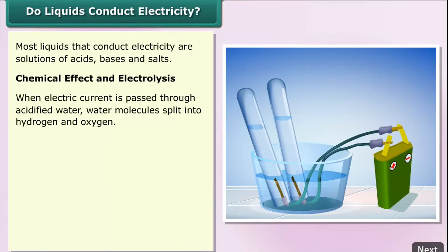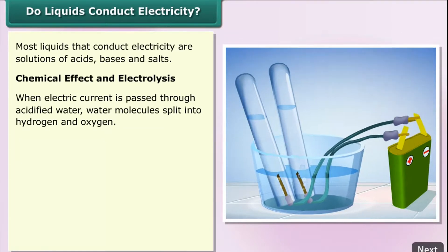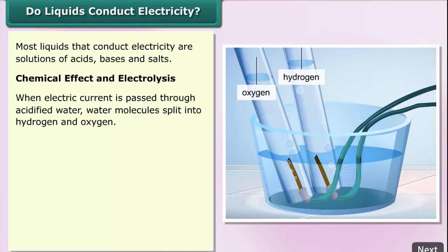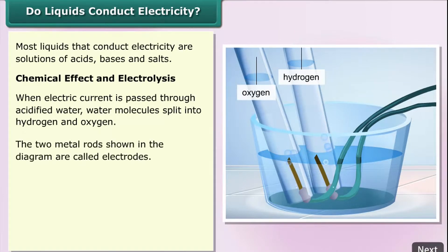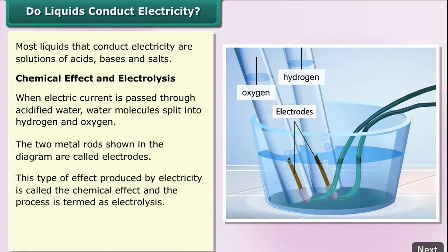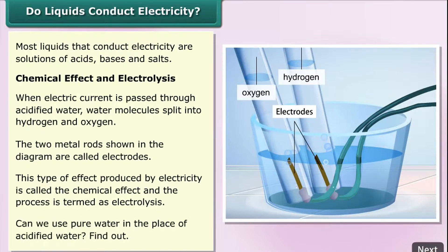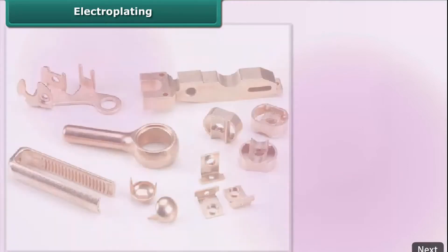When electric current is passed through acidified water, water molecules split into hydrogen and oxygen. The two metal rods shown in the diagram are called electrodes. This type of effect produced by electricity is called the chemical effect, and the process is termed electrolysis. Can we use pure water in place of acidified water? Find out.